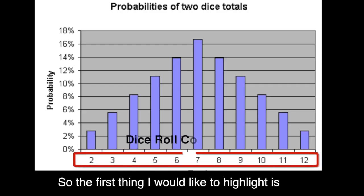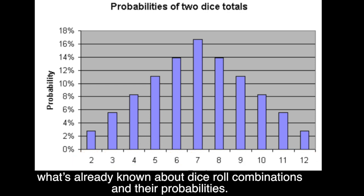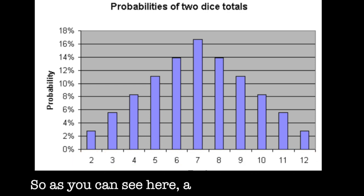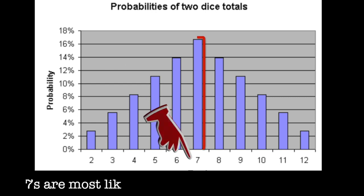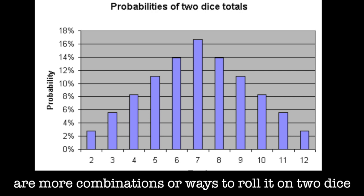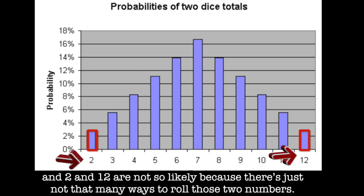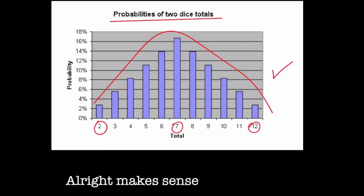The first thing I'd like to highlight is what's already known about dice roll combinations and their probabilities. So as you can see here, according to this chart, 7s are more likely to come out because there are more combinations or ways to roll it on two dice. 2 and 12 are not so likely because there's just not that many ways to roll those two numbers. Alright, make sense so far? Check.